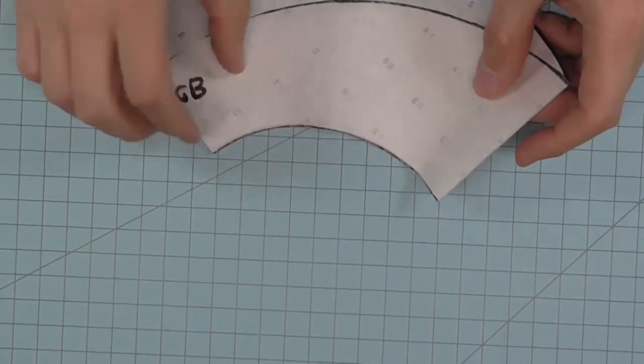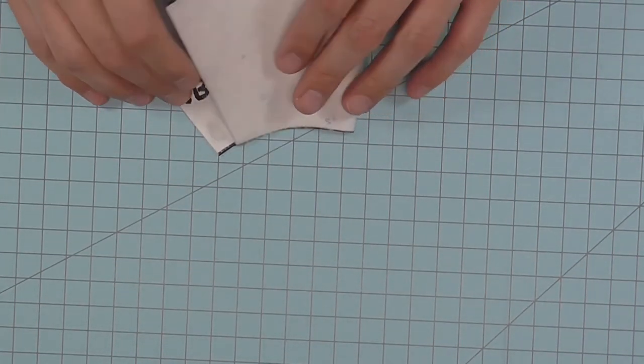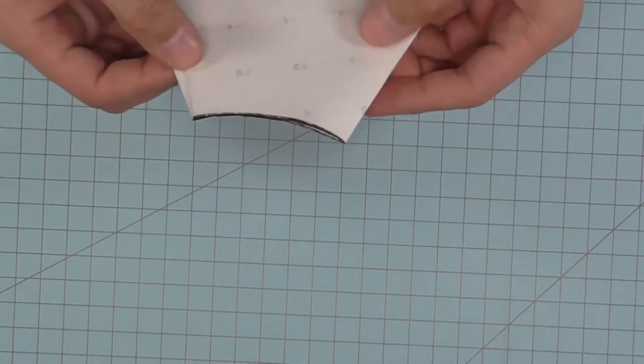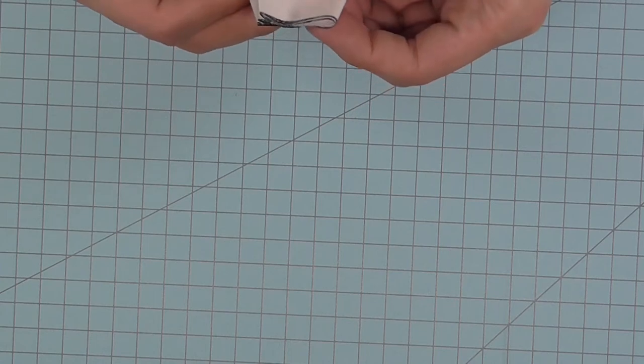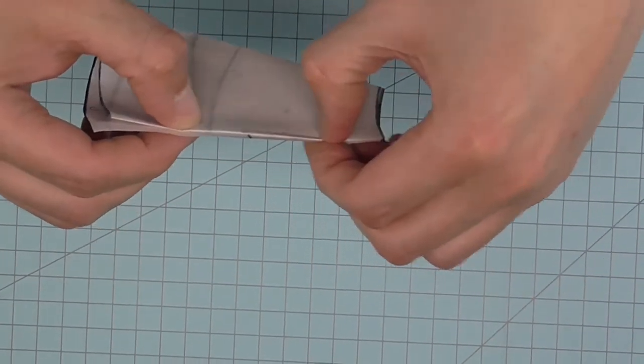Then once again, you're going to fold in half point to point. Once more, you're going to fold in half point to point. Make sure you really crease those lines.